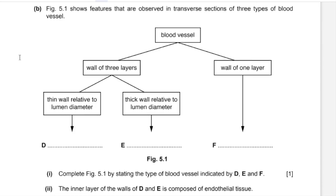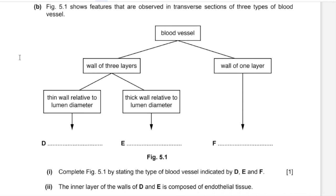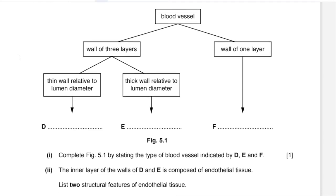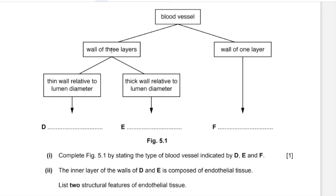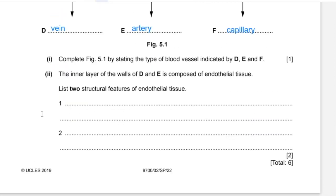Part B: Figure 5.1 shows features observed in transverse sections of three types of blood vessels. Complete figure 5.1 by stating the type of blood vessel indicated by D, E, and F. A vessel with a thin wall relative to lumen diameter is a vein; a vessel with a thick wall relative to lumen diameter is an artery; and a blood vessel with a wall of a single layer is a capillary. The inner layer of walls of D and E is composed of endothelial tissue. Two structural features: it has a smooth surface which reduces resistance to blood flow, and it is only one cell thick.